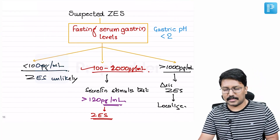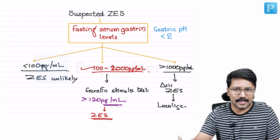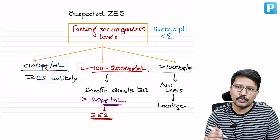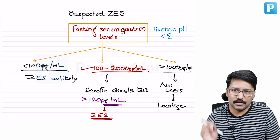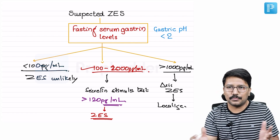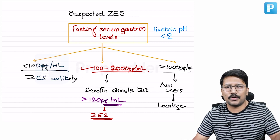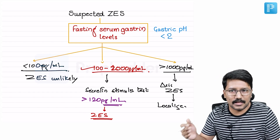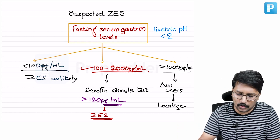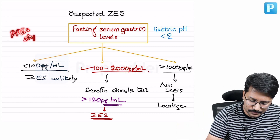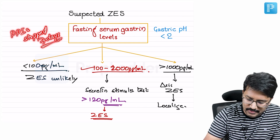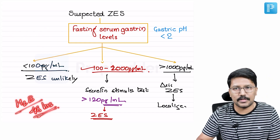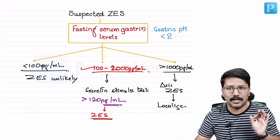This approach has some challenges. The main challenge is that patients may already be on PPIs or H2 blockers for their peptic symptoms or dyspepsia. We have a very low threshold for starting PPIs these days. PPIs will clearly influence fasting gastrin level testing and gastric acid pH estimation. Therefore, PPIs should be stopped for seven days before performing fasting gastrin levels and gastric pH estimation, and H2 blockers should be stopped for a minimum of 48 hours. These are two important MCQ points.